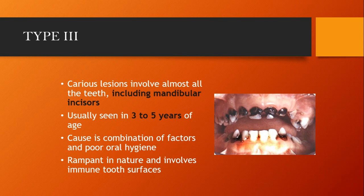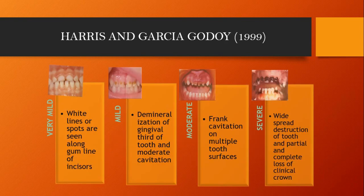The most severe form of early childhood caries is Type 3. It includes all the teeth, including the mandibular incisors. Mandibular incisors are normally the least affected, but in Type 3 early childhood caries they are also affected. It is usually seen in children of 3 to 5 years of age. The cause is a combination of factors and poor oral hygiene, and it is very rampant in nature — meaning very fast growing — and it involves immune tooth surfaces too.